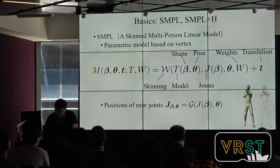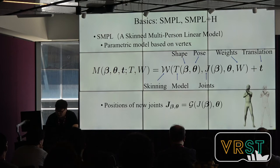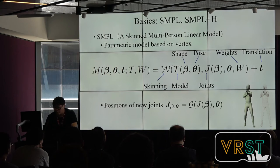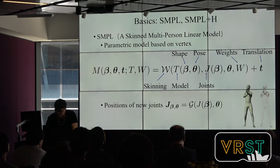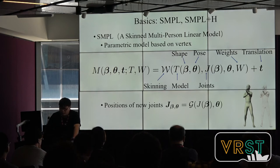We now show the details of our method. First, I need to introduce two related human models: SMPL and SMPL-plus-edge. SMPL is a popular, widely used statistical human model. Different from the SCAPE model, SMPL takes a pose-based skinning approach. Beta and theta are the shape parameter and the pose parameter respectively. J are the joint positions in rest pose. W is the blending weights for vertices. Here is the skinning function to generate the appearance of the body. The new joint positions are updated by the function at the bottom.